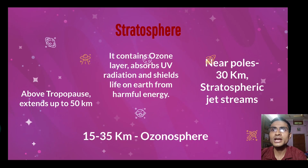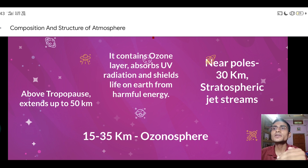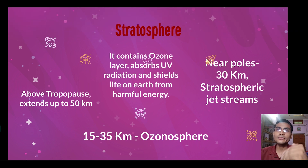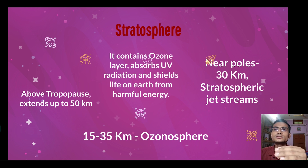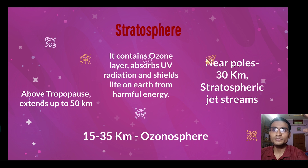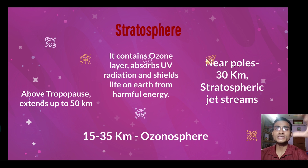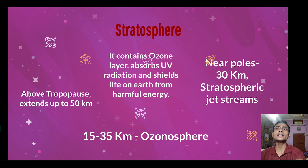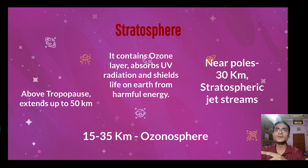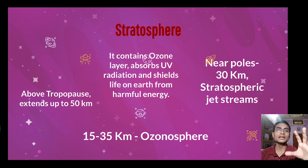Now we start with stratosphere. After troposphere ends, stratosphere begins and extends up to 50 km. Between 15 to 35 km in stratosphere lies the ozone sphere — the ozone layer, which we explained at the beginning in the keywords. UV radiation is absorbed here, which protects life on Earth.